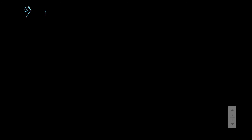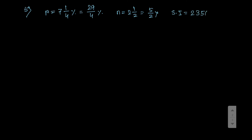Now move on to sum number 5. Find the sum of money when the simple interest is given. Here R equals 7 and one-quarter percent per annum, that means 29 by 4 percent. N or T equals 2 and one-half, that equals 5 by 2 years. Simple interest equals 2356.25. Find the principal.